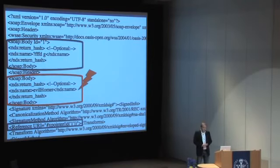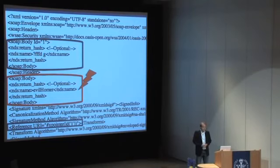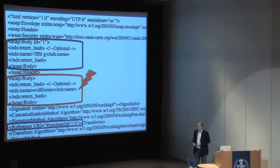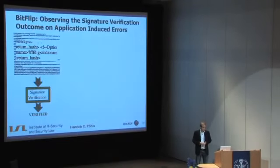The problem here, called XML wrapping, is that an application programmer who has been told 'you get a message, there's some header, it has been security checked — once you see the message, the signature verification process has been run' will feed it into their Java digital signature verification method and get back 'true.' So you think it's verified and continue. The next step is: where is my name? It's in a body, in this envelope. And then the application ends up doing something in the name of 'Evil Homer.' By the way, this example is taken from a colleague at Ruhr University Bochum named Michael Jensen, who is also working in this field.